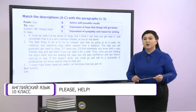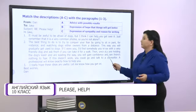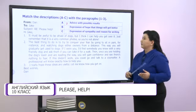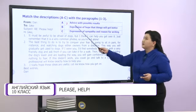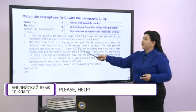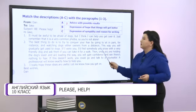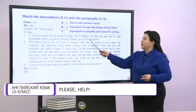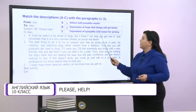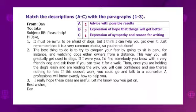Let's check your answers. A is paragraph number 2: advice with possible results. B is number 3: expression of hope that things will get better. C is number 1: expression of sympathy and reason for writing.